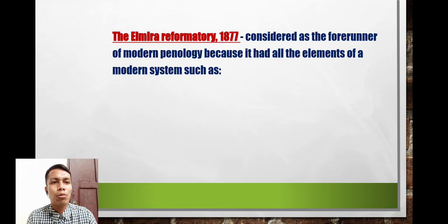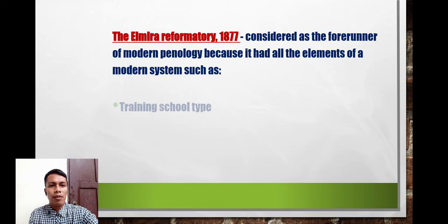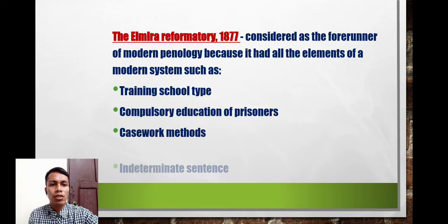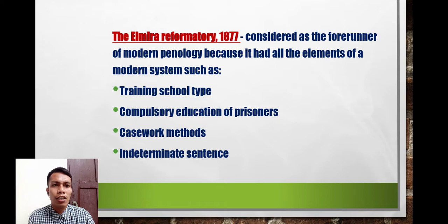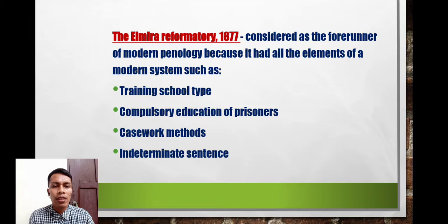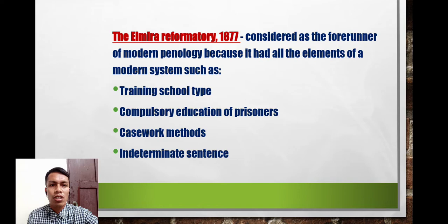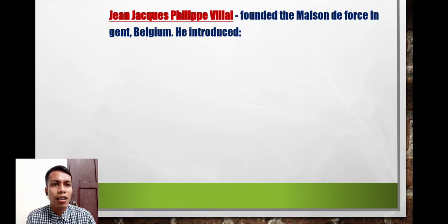The Elmira Reformatory, established in 1877, is considered the forerunner of modern penology because it had all the elements of the modern prison system, such as training school-type programs, compulsory education for prisoners, casework methods, and the indeterminate sentence. This is where modern penology truly began, with prisoners being housed, provided training, compulsory education, and casework methods.